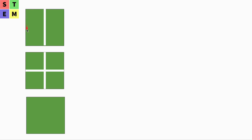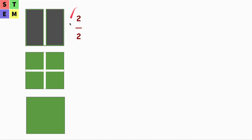If I select one equal part I will have one half, and if I select two equal parts I will have two halves. I've selected two equal parts, marked in gray, and it tells me that is two halves. A whole object is one, and two halves also equals one.